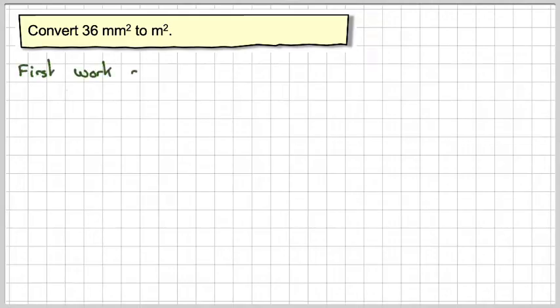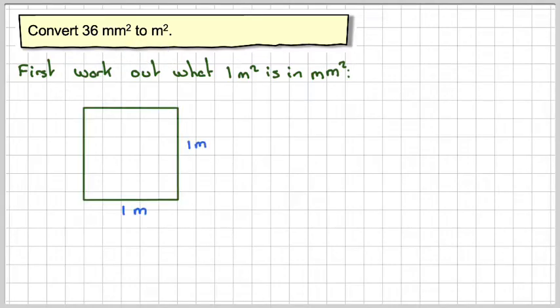So first of all, what we're going to do is work out what 1 meter squared is in millimeters squared, because meter squared is the larger unit here. So we're going to draw a square 1 meter by 1 meter, and therefore the area of that square will be 1 meter squared.